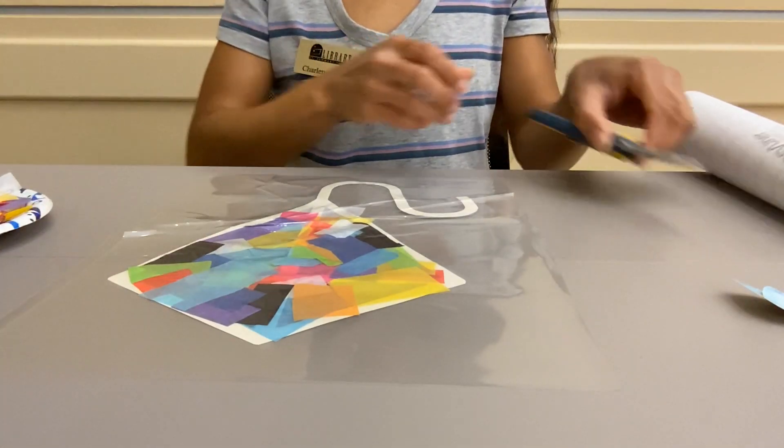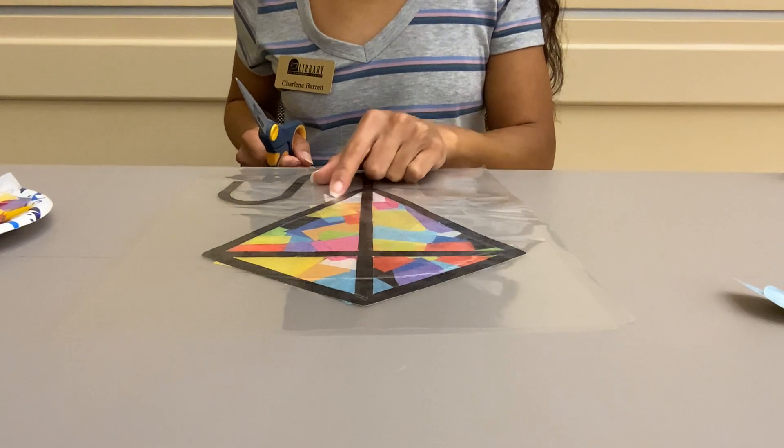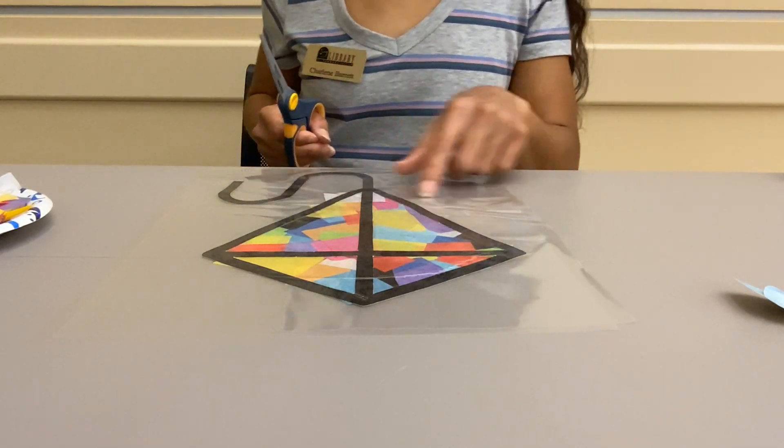It should look like this right now. Then you're going to take your scissors and you're going to cut around it. So it's okay if you get some tissue paper out on the edges because you're just going to cut that right off.